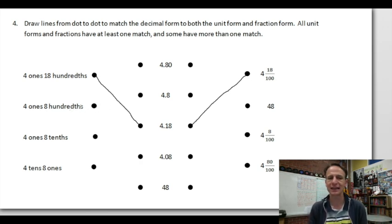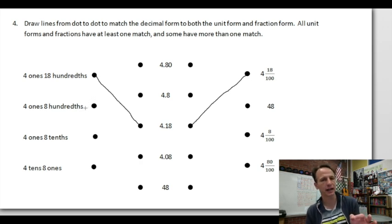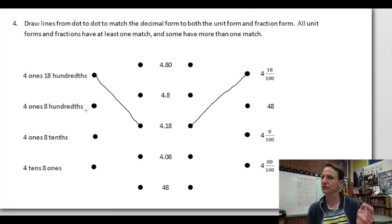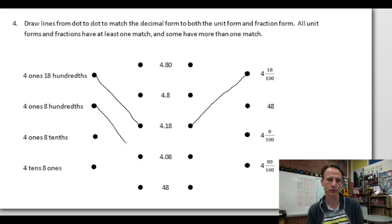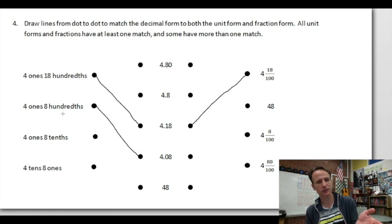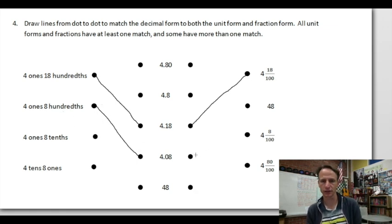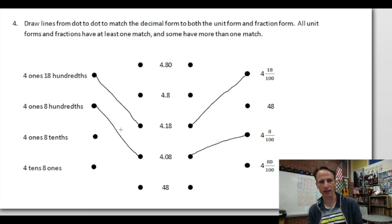Four ones, eight hundredths: how many tenths do we have? Zero. So we should see four point zero eight — 4.08. We have an eight in the hundredths place, but no tenths. In fraction form this reads four and eight over one hundred — eight hundredths. There it is.